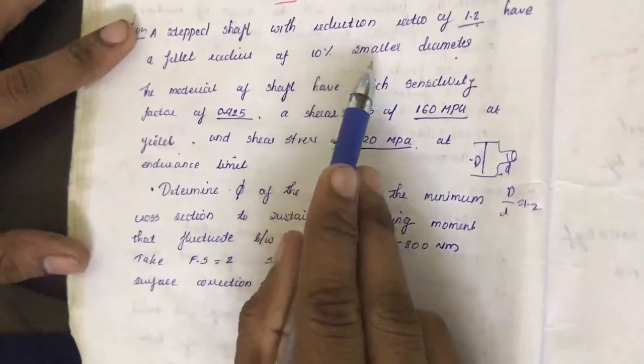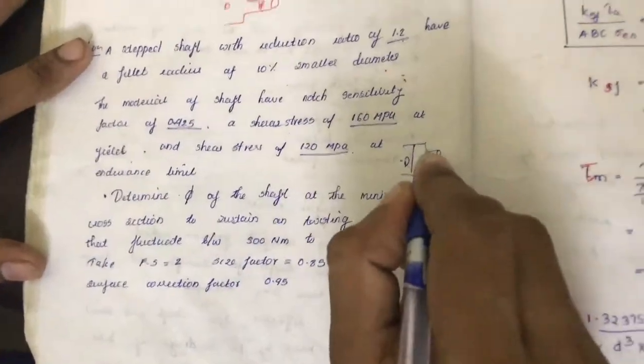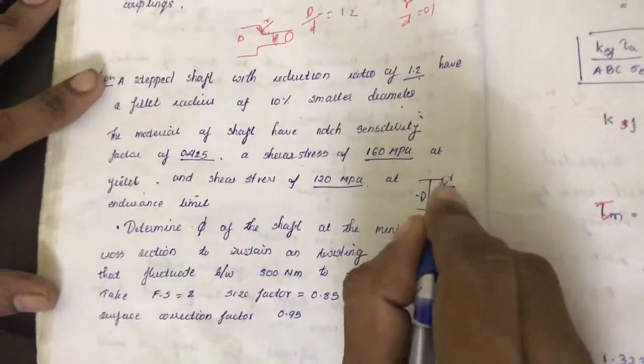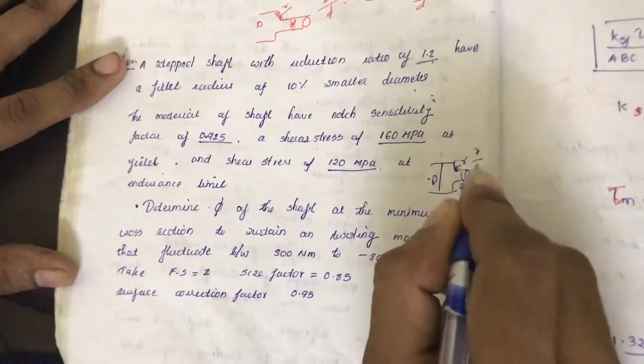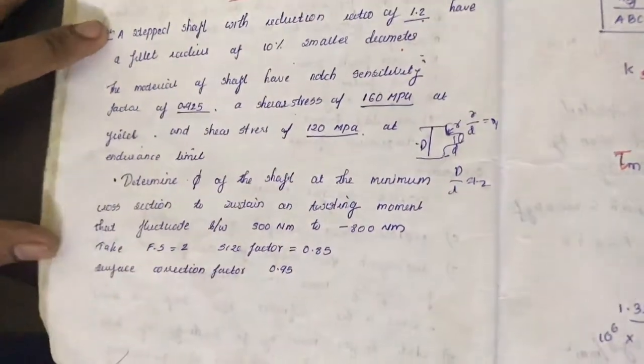Then it is given fillet radius is 10 percentage of the smaller diameter. This is the fillet radius r, this radius. So r by d is equal to 0.1, 10 percentage means 0.1, that is given in the question.